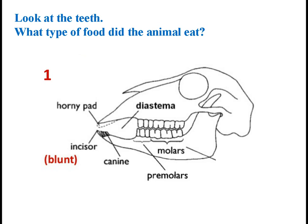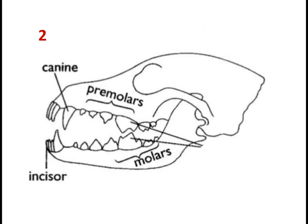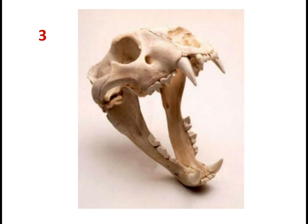At the end of the presentation, I would like to give you an assignment. Look at the picture and identify what type of food the animal eats and which order of class Mammalia it belongs to. Take care of your teeth and keep smiling. Thank you.